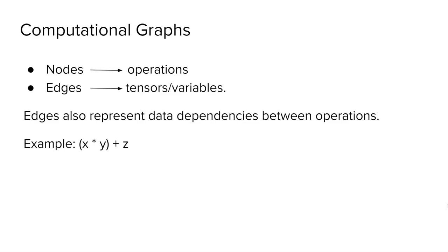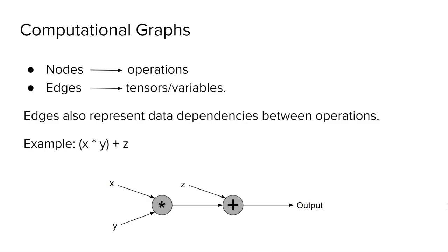As an example, let's construct a computational graph for x times y plus z. We have two operations being performed here, and hence we add a node for multiplication and a node for addition. We are multiplying x and y, so the multiplication node has two incoming edges, one for x and one for y. Similarly, we have two incoming edges for the addition node: one for z and the other for the output of x times y.